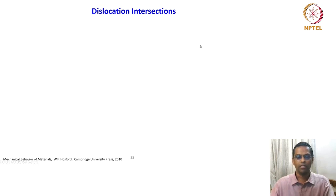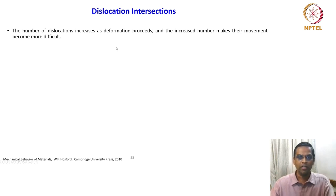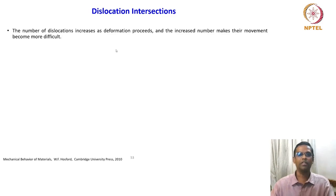We looked at interactions and now this is intersections between two line dislocations. The number of dislocations increases as the deformation proceeds and the increased number makes their movement become more difficult. We are now getting into details of deformation, and in the context of dislocation multiplication, we are indirectly discussing plastic deformations.